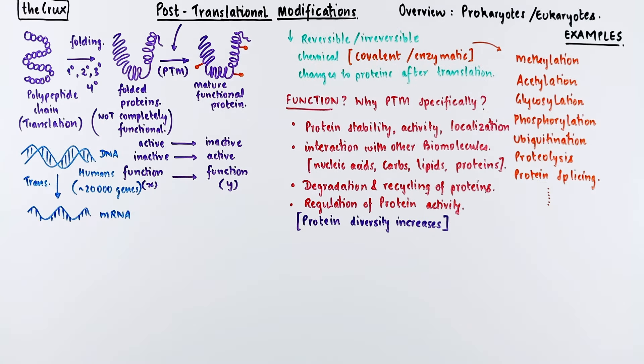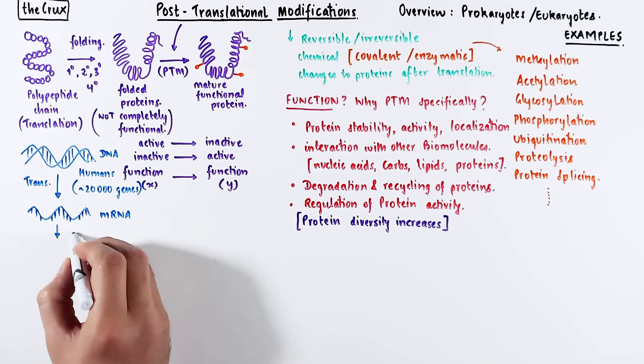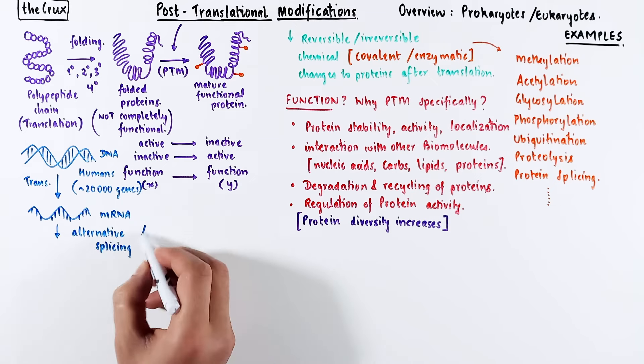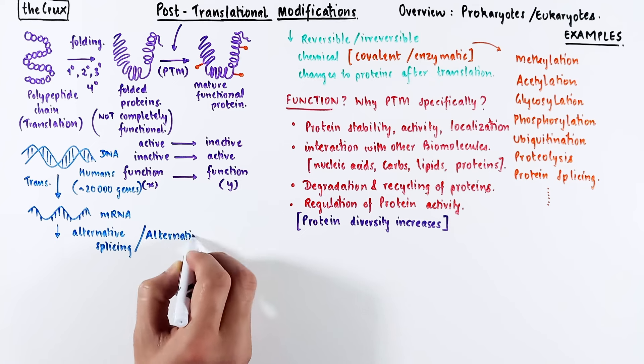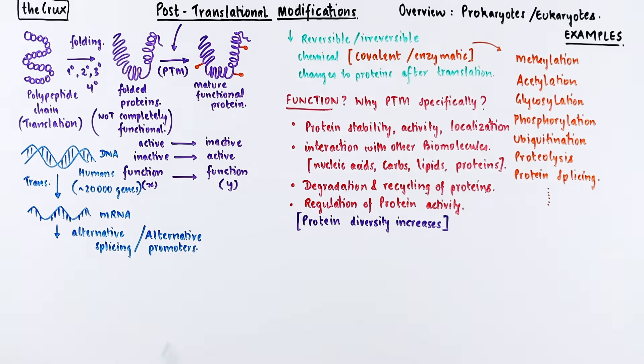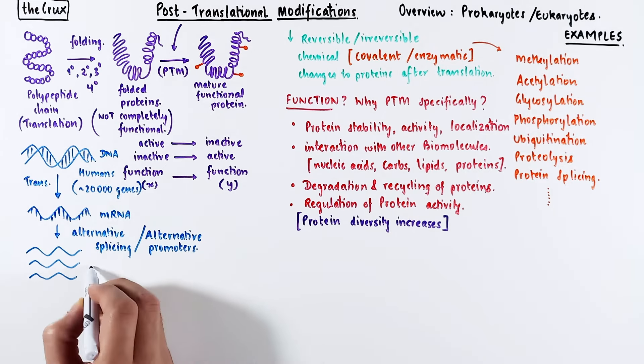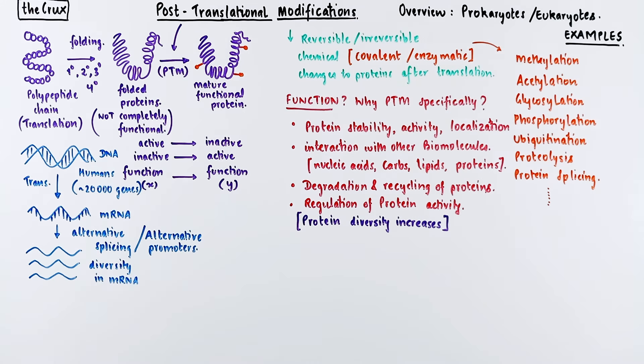The exons in these RNAs can be concatenated via alternative splicing to make different kinds of mRNAs. Sometimes alternative promoters can be used to transcribe the same genes, resulting in different mRNA. Essentially, all these processes are responsible for creating diversity of mRNA.